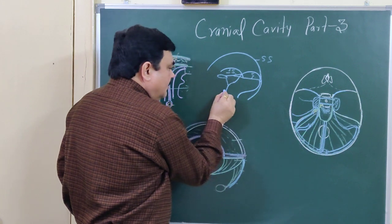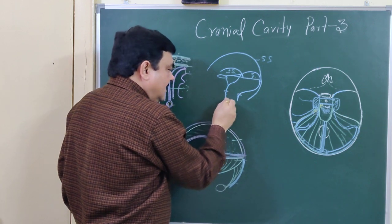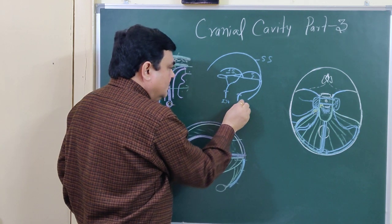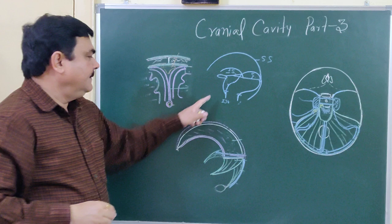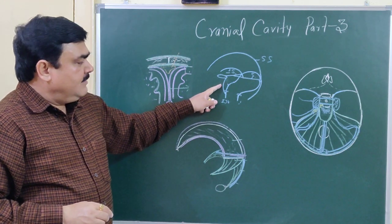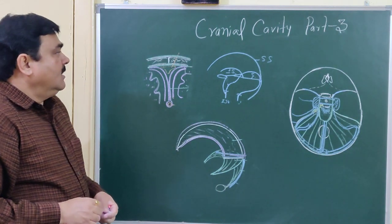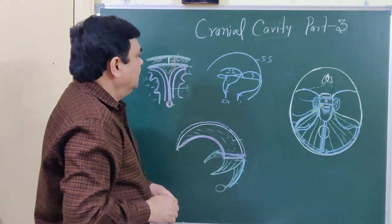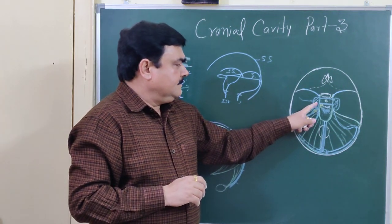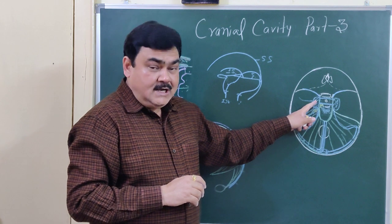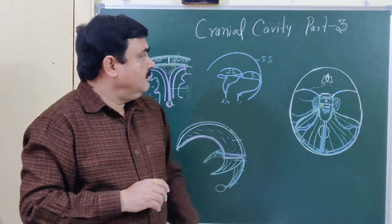The sigmoid sinus continues to the jugular foramen. Through the jugular foramen it passes as the internal jugular vein. The inferior petrosal sinus is the first tributary of the internal jugular vein. So the inferior petrosal sinus is the first tributary of the internal jugular vein.